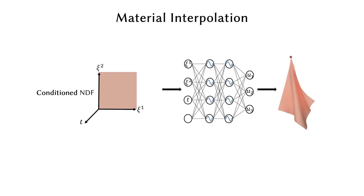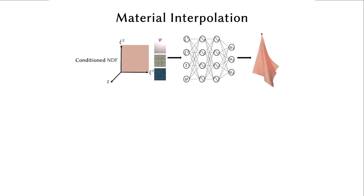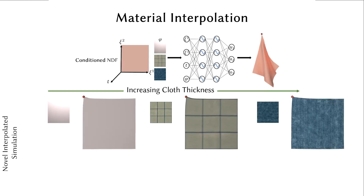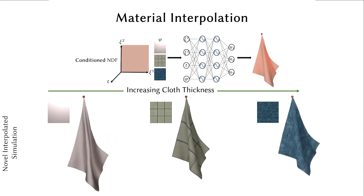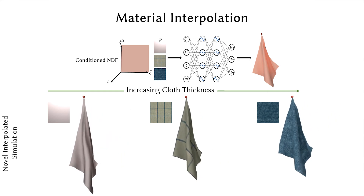Neural Cloth Sim can incorporate further priors learned from data. For instance, it can be trained jointly with multiple materials by conditioning the NDF on material properties such as thickness, elasticity, and mass. At test time, our method supports simulation queries with linear interpolation in the material space.